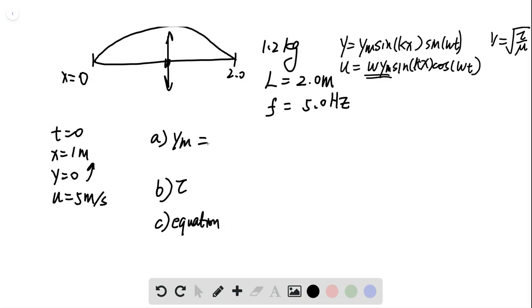So this is equal to um over omega because we know the maximum u equals omega times ym. So um here is 5 meter per second and omega is 2 pi times f, so 2 pi times 5 hertz. So 5 over 10 pi, and this is equal to 0.16 meter.